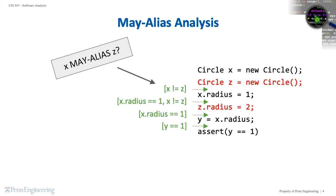An analysis that is dedicated to proving facts of this form is called a may alias analysis. May alias analysis is also what we call pointer analysis. You might be wondering: just as we had may versus must data flow analyses, is there a counterpart to may alias analysis? The answer is yes, and as you might expect, it is called must alias analysis.